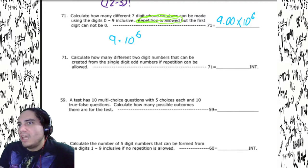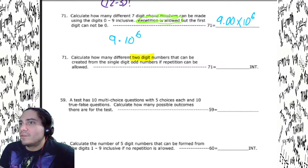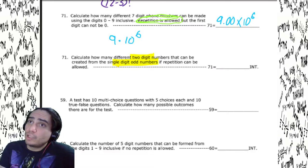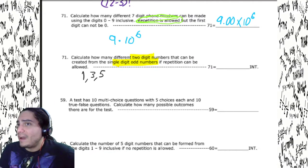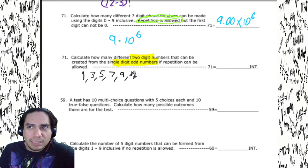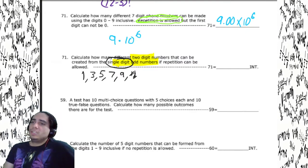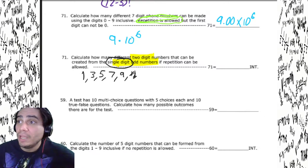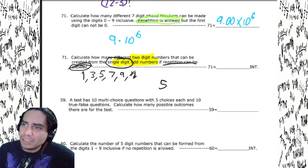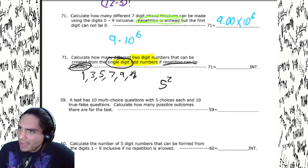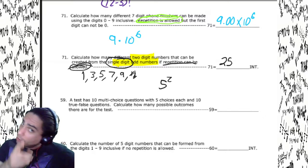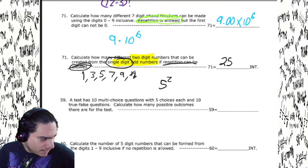How many two-digit numbers can be created from single-digit odd numbers if repetition is allowed? First we need to know our odd numbers: one, three, five, seven, nine — and not eleven, because the key here is single-digit odd numbers. So we only have five numbers to choose from. Repetition is allowed, so we've got five choices raised to the second power: 5² = 25. That's our answer — 25.